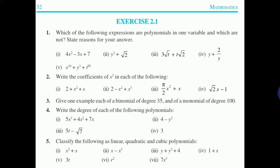Question 5: classify the following as linear, quadratic, and cubic polynomials. Linear means degree 1, quadratic means degree 2, cubic means degree 3. (a) x² + x — degree 2, quadratic. (b) x − x³ — degree 3, cubic. (c) y + y² + 4 — degree 2, quadratic. (d) 1 + x — degree 1, linear. (e) 3t — degree 1, linear. (f) r² — degree 2, quadratic. (g) 7x³ — degree 3, cubic.